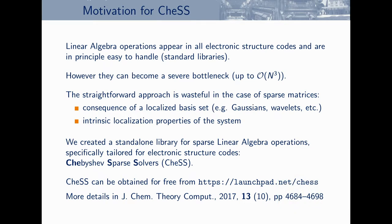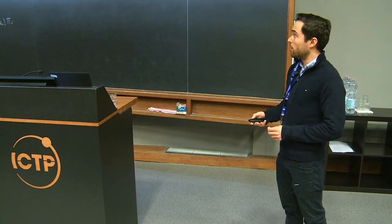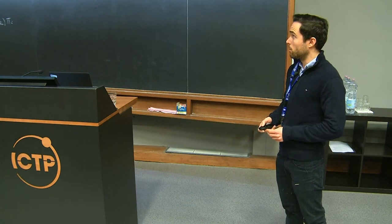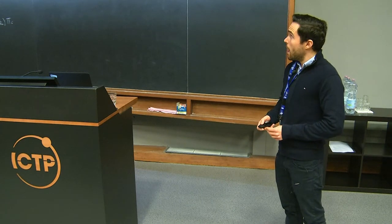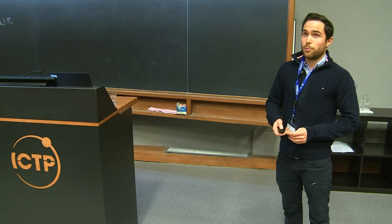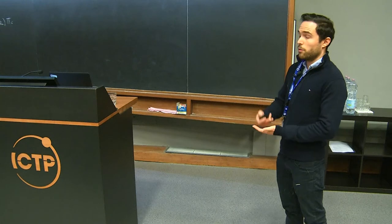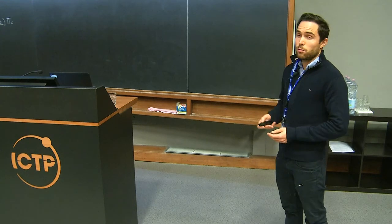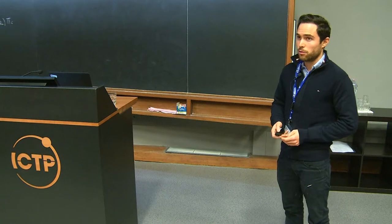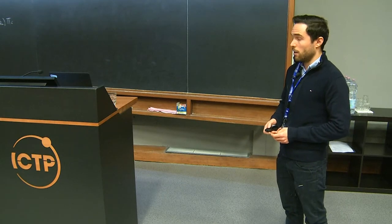Linear algebra is a very important topic in electronic structure codes — sooner or later all codes will have to deal with this. You can do it in the standard way, for instance with LAPACK or ScaLAPACK. But they can become a bottleneck because in the worst case they scale cubically, and so your codes will hit the wall. It's even worse if you have sparse matrices, because then you just multiply a lot of zeros and waste a lot of compute time.